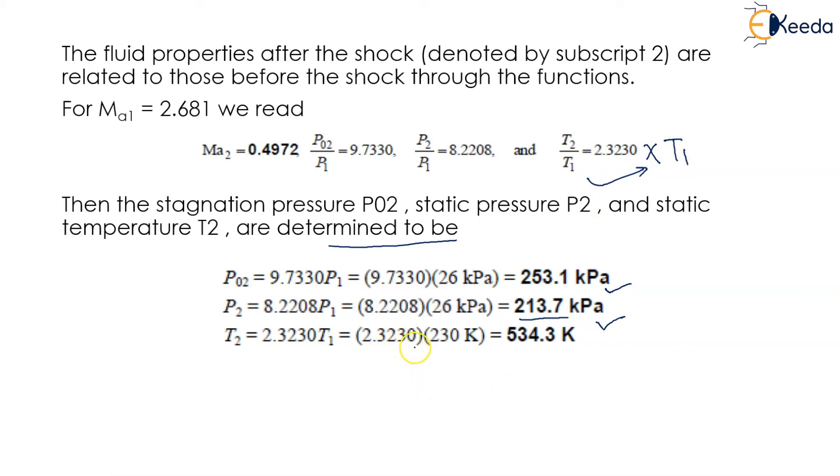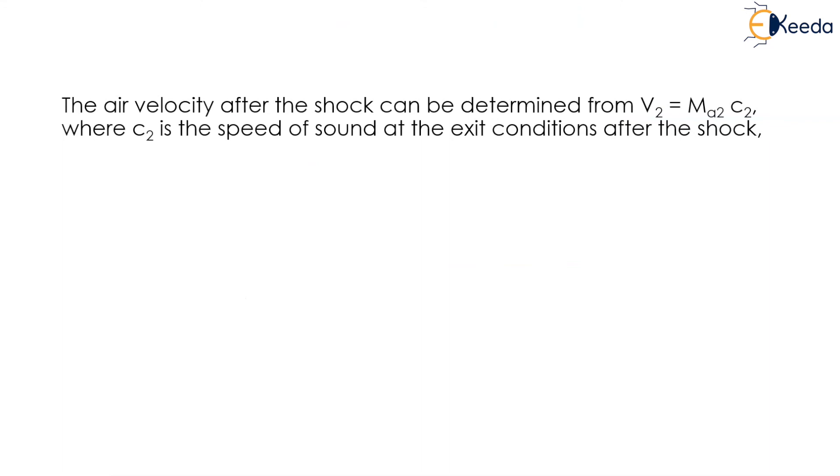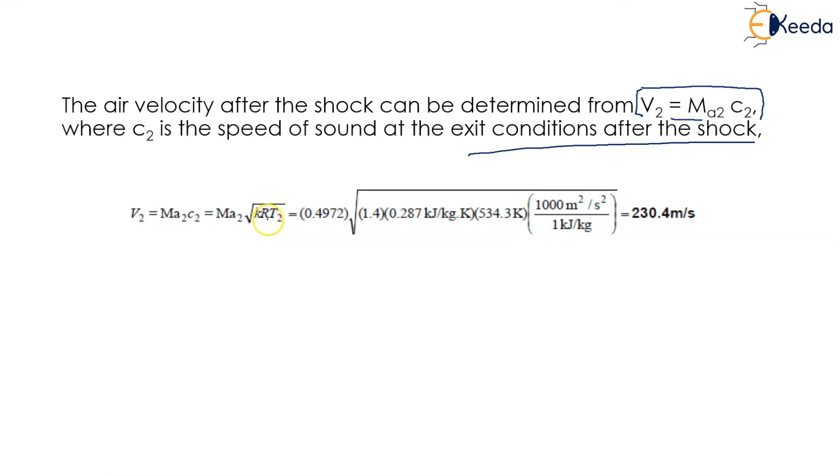The air velocity after the shock can be determined from V2 = MA2 × C2, where C2 is the speed of sound at the exit conditions after the shock.